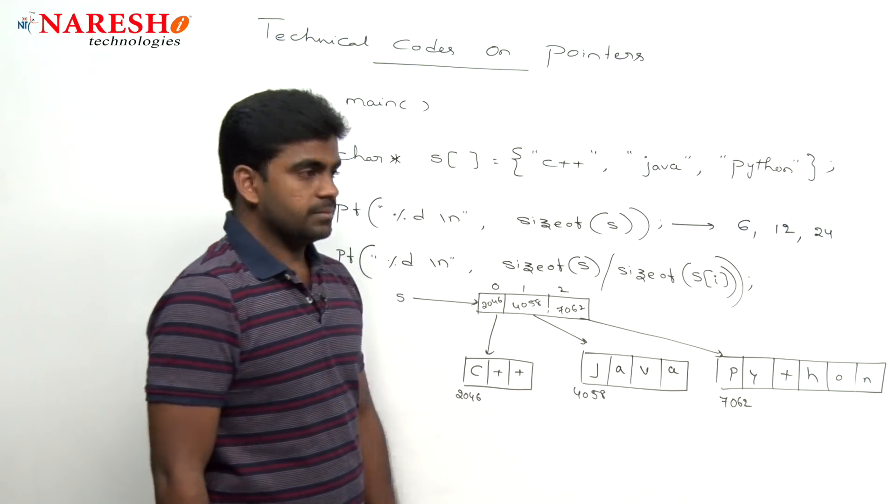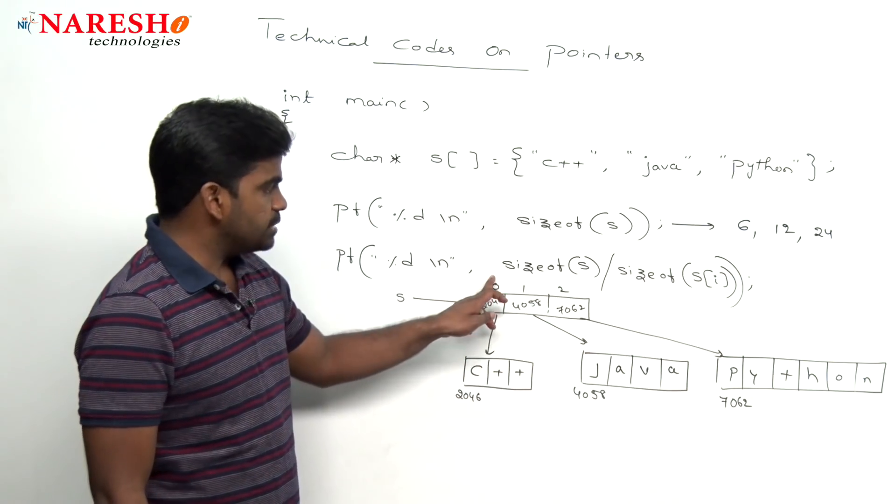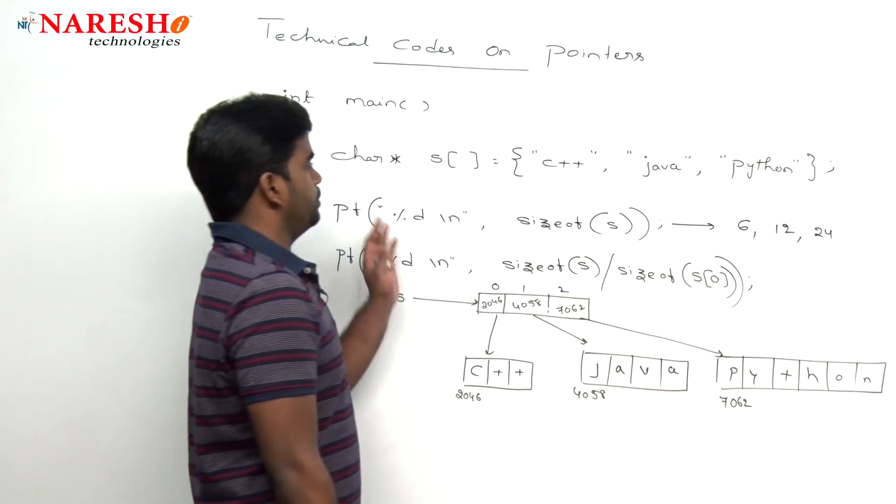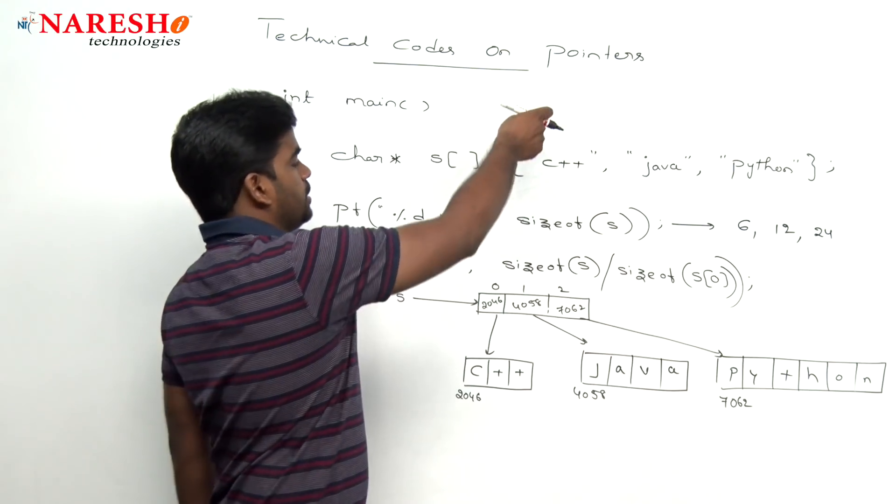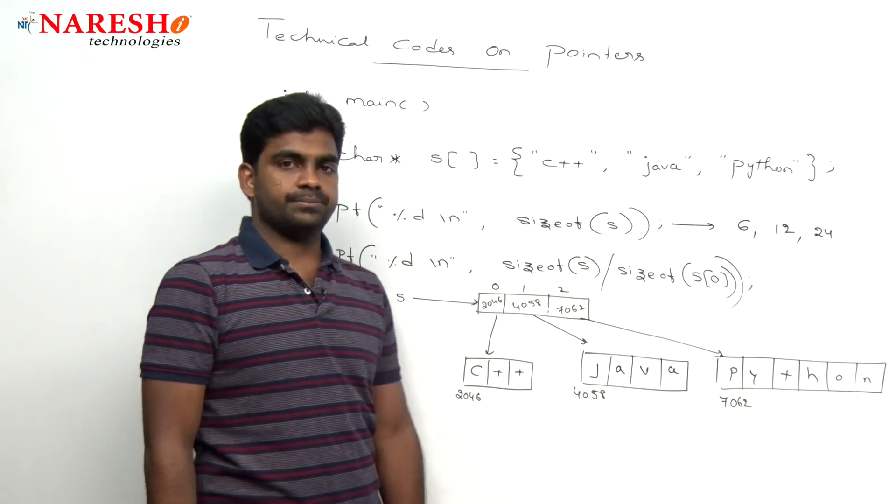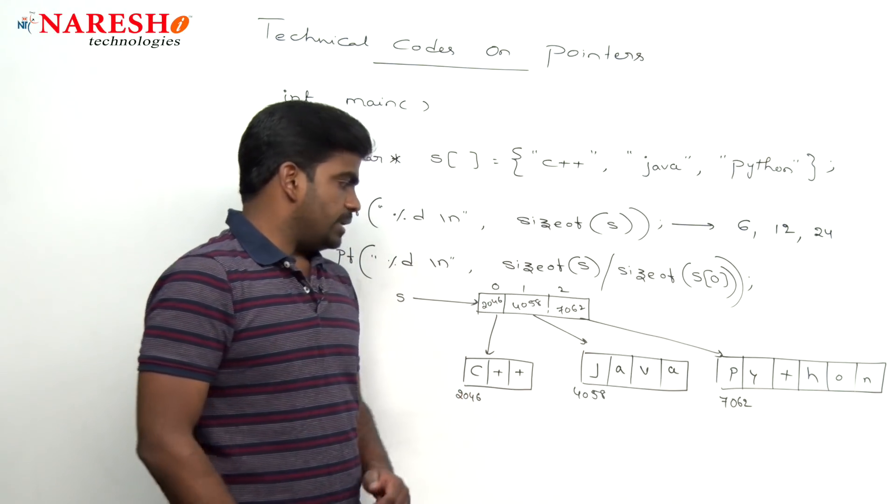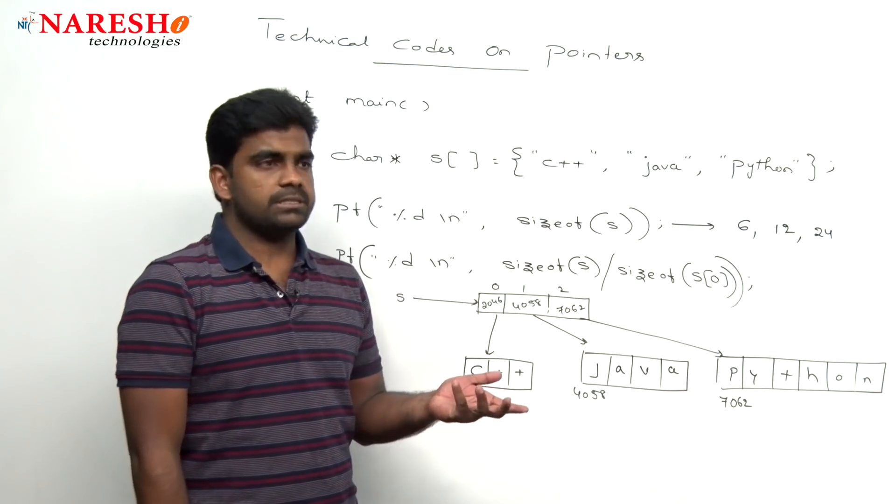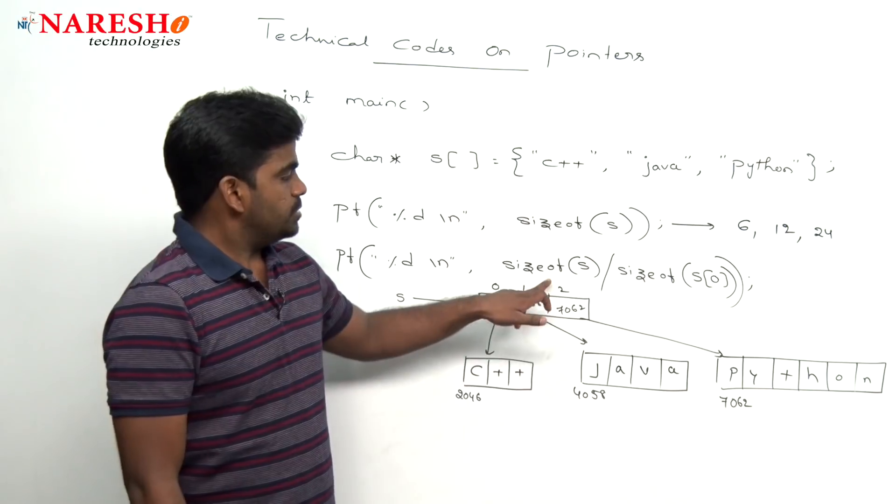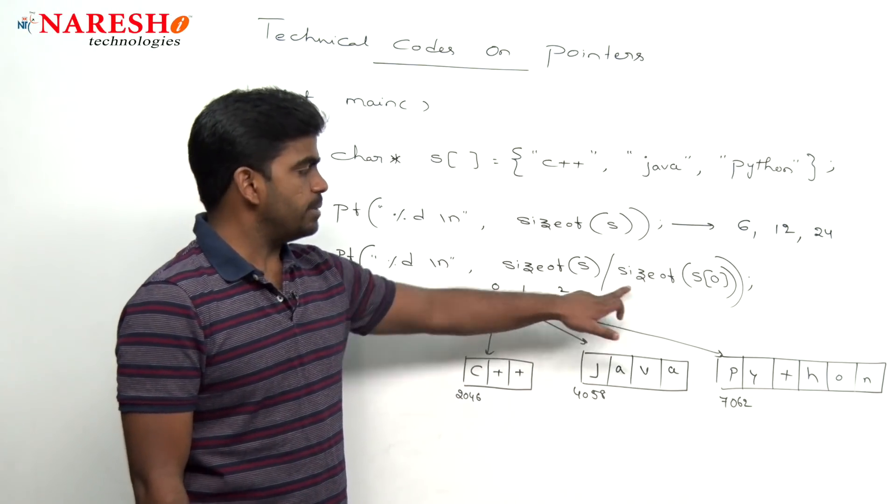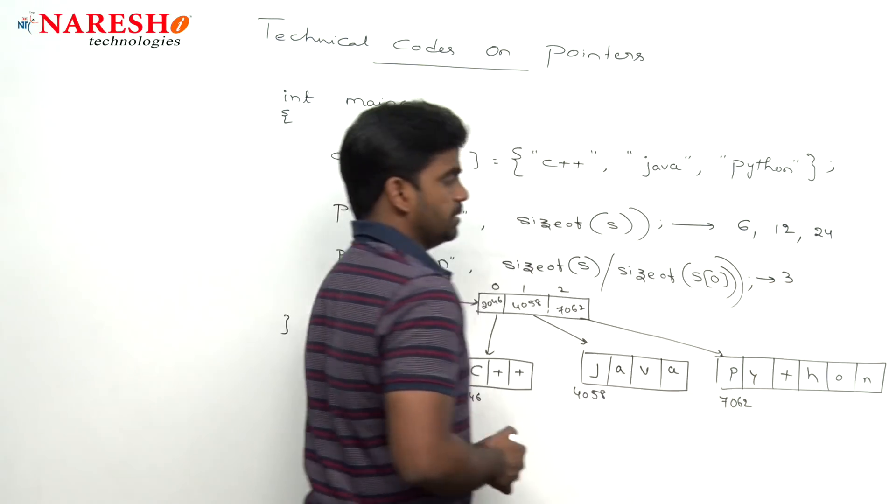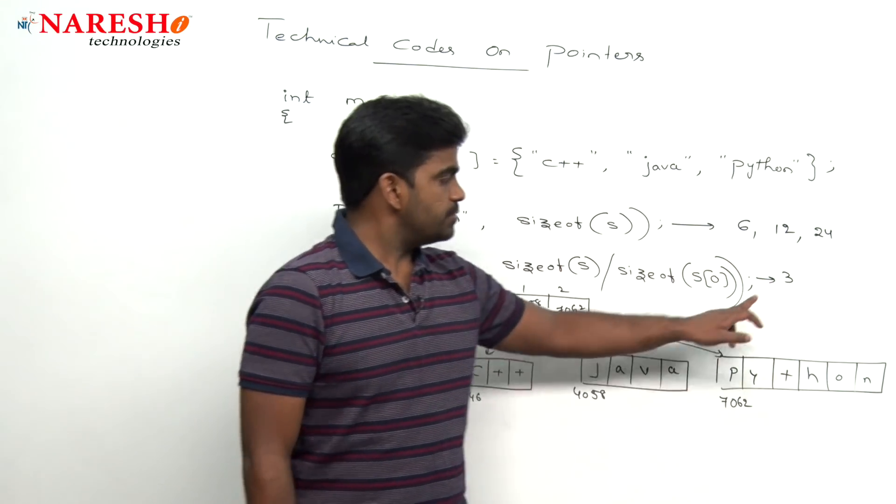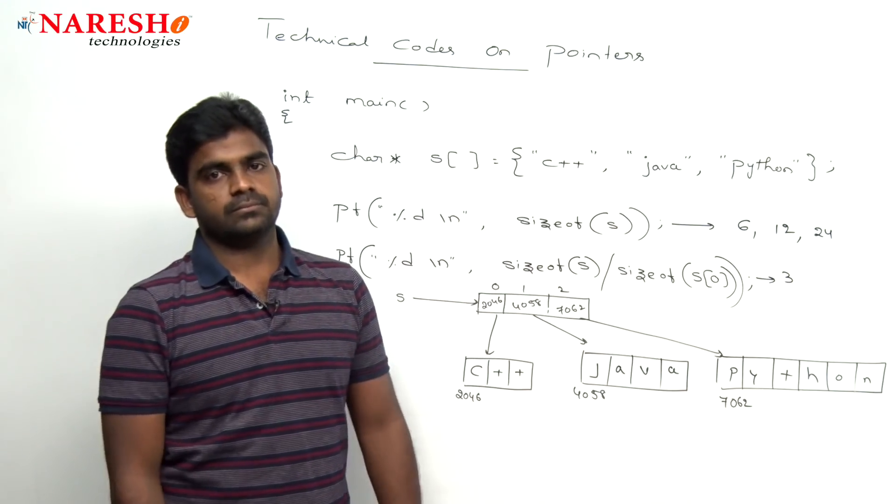And this one is what? The size of s of i. The size of s of i means what? If i value you can say that it is 0, s of 0, because directly we are not taking i value here. So this is what s of 0, 0th location element. So this is what 2046, is 2046. But for example, it is 2 bytes or 8 bytes or 4 bytes. So here it is size of s, if it is 2 bytes, 6 by 2 is 3. Suppose if it is 12, 12 by 4 is 3 only. 24 by 8 means what? 3 only. So this value will not change, it is 3.